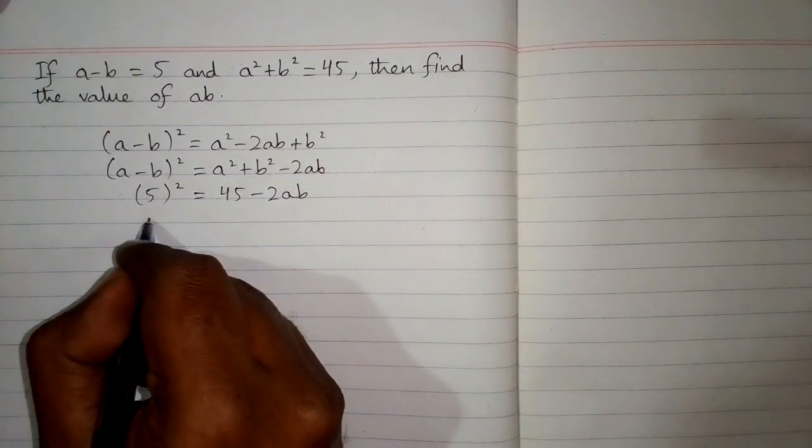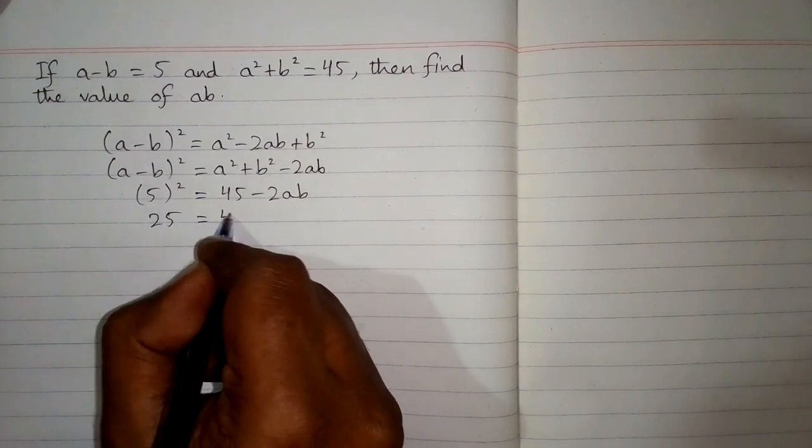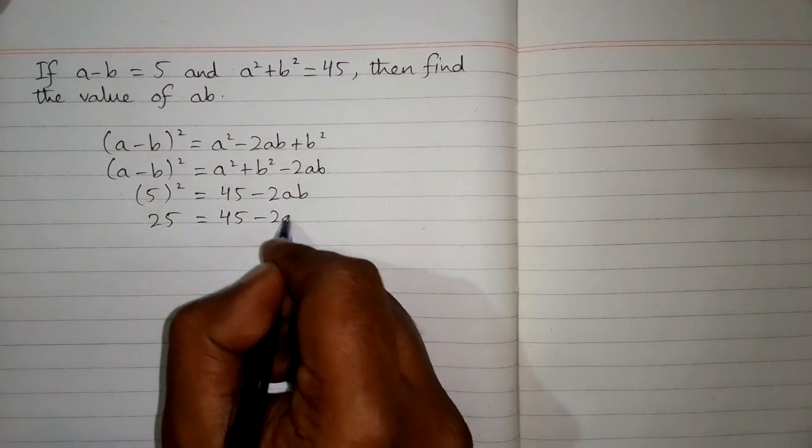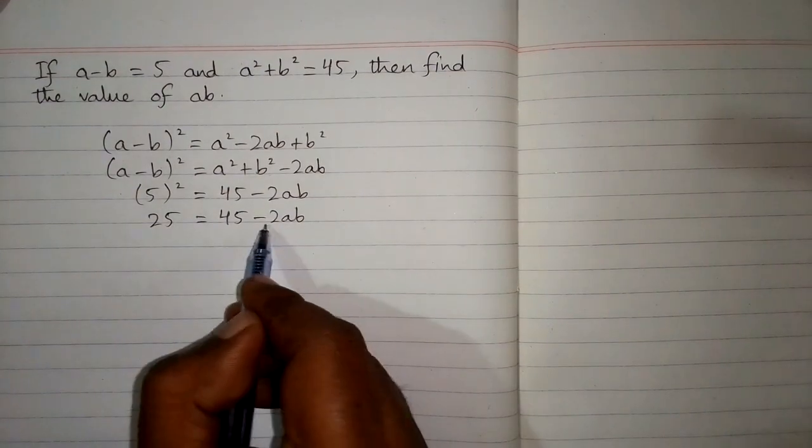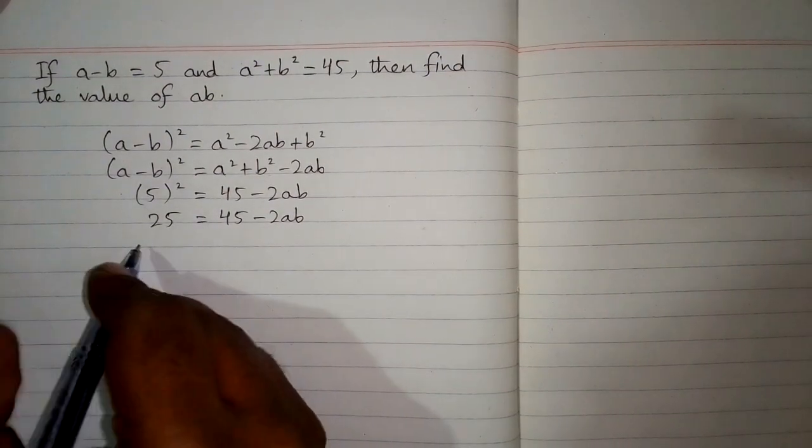Square of 5 is 25, so we have 25 is equal to 45 minus 2ab. We can take this minus 2ab on this side of equation.